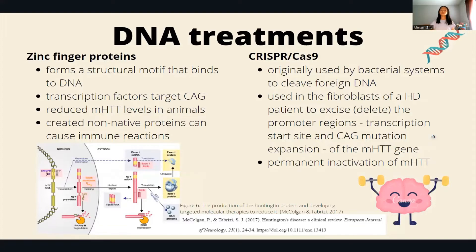There are also two DNA treatments — zinc finger proteins and CRISPR — which are active in the nucleus. These approaches target the mutated DNA, preventing its transcription into RNA and cutting off the pathway for the mutated protein to form at the very start.